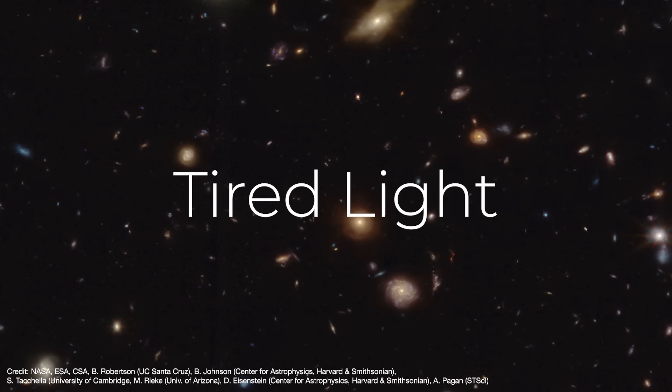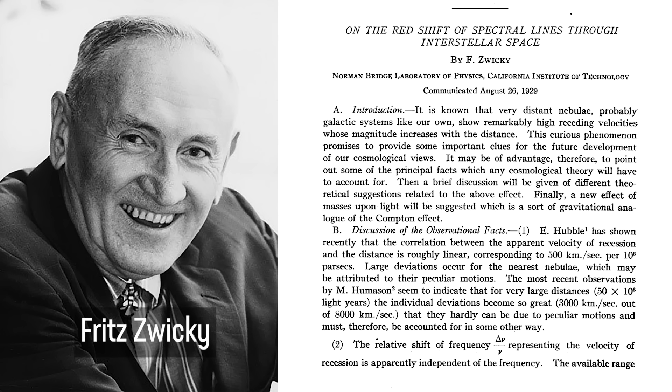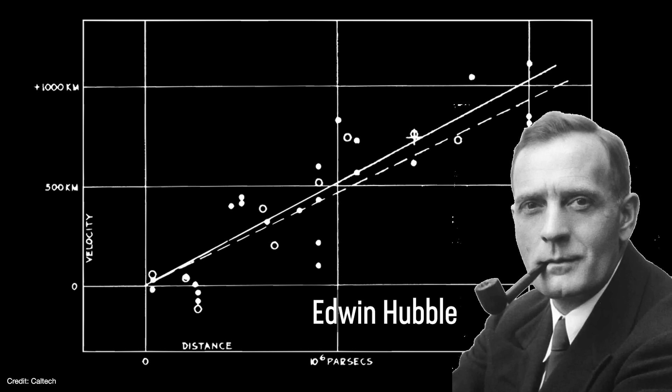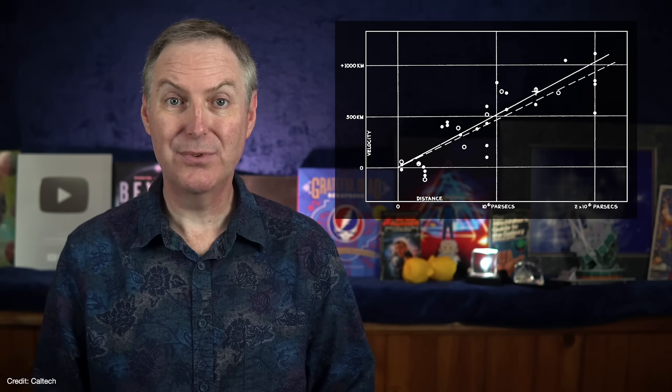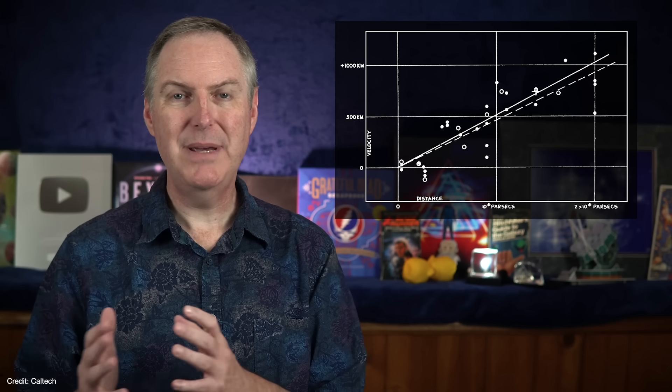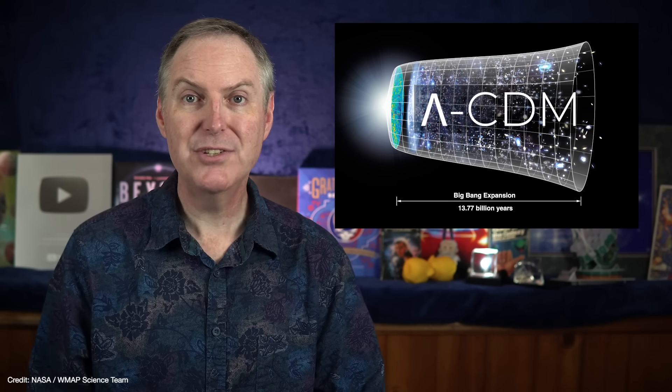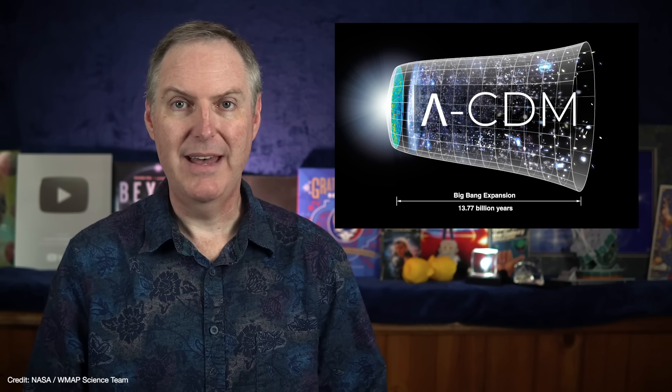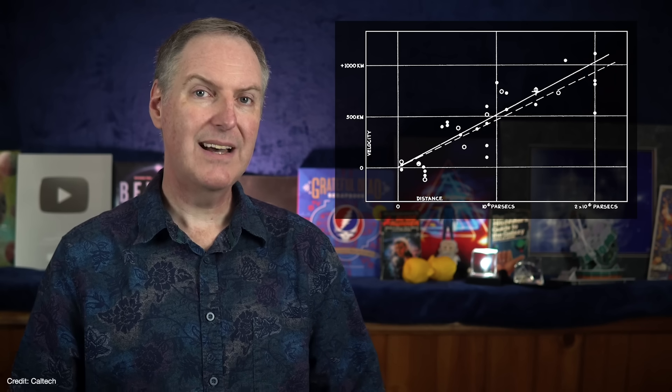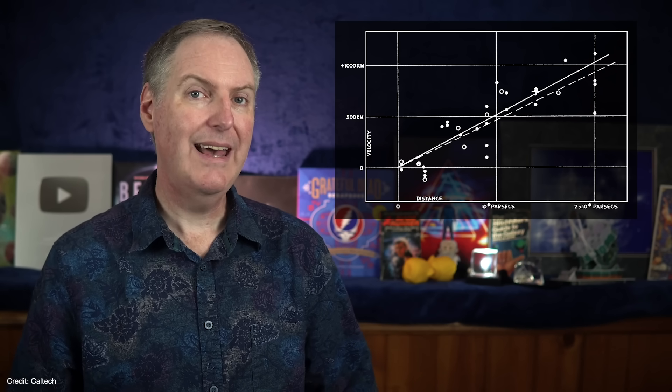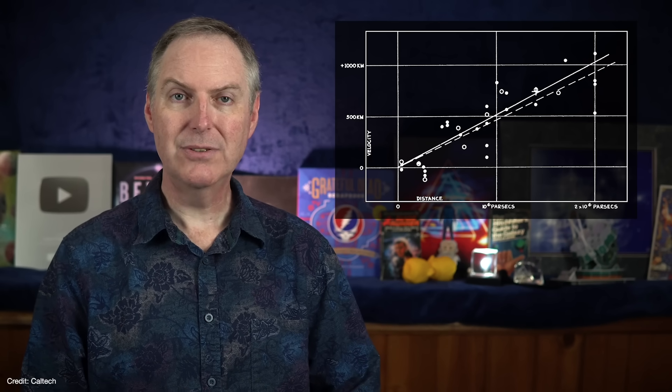The first modification is an idea called tired light. It was proposed by Fritz Zwicky back in 1929 as a reaction to Edwin Hubble's discovery that galaxies redshifts increased with their distance. Today, we understand this as the discovery of the expanding universe which led to the Big Bang model, which led to the discovery of dark energy, which led to Lambda CDM that we know and love today. But at the time, it contradicted the widely held belief that the universe was static and eternal.